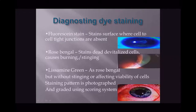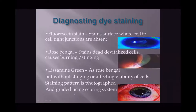In diagnostic dye testing, fluorescein stains areas where cell-to-cell tight junctions are absent and is helpful in severe cases. Rose Bengal stains devitalized cells but can cause burning. Lissamine green acts similarly to Rose Bengal without stinging or affecting cell viability and is therefore preferred. Staining patterns are photographed and graded using scoring systems to determine dry eye severity.